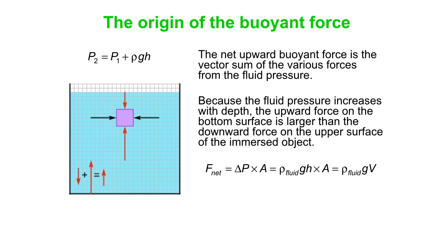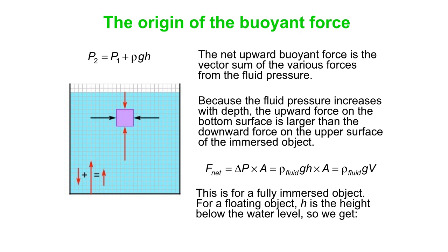And if you look at our equation, P2 minus P1, that's delta P, is simply rho gh. So you can replace delta P by rho gh. And then, what is the height times the area? Well, that's actually the volume of the cube. So that's what you get for a fully immersed object.